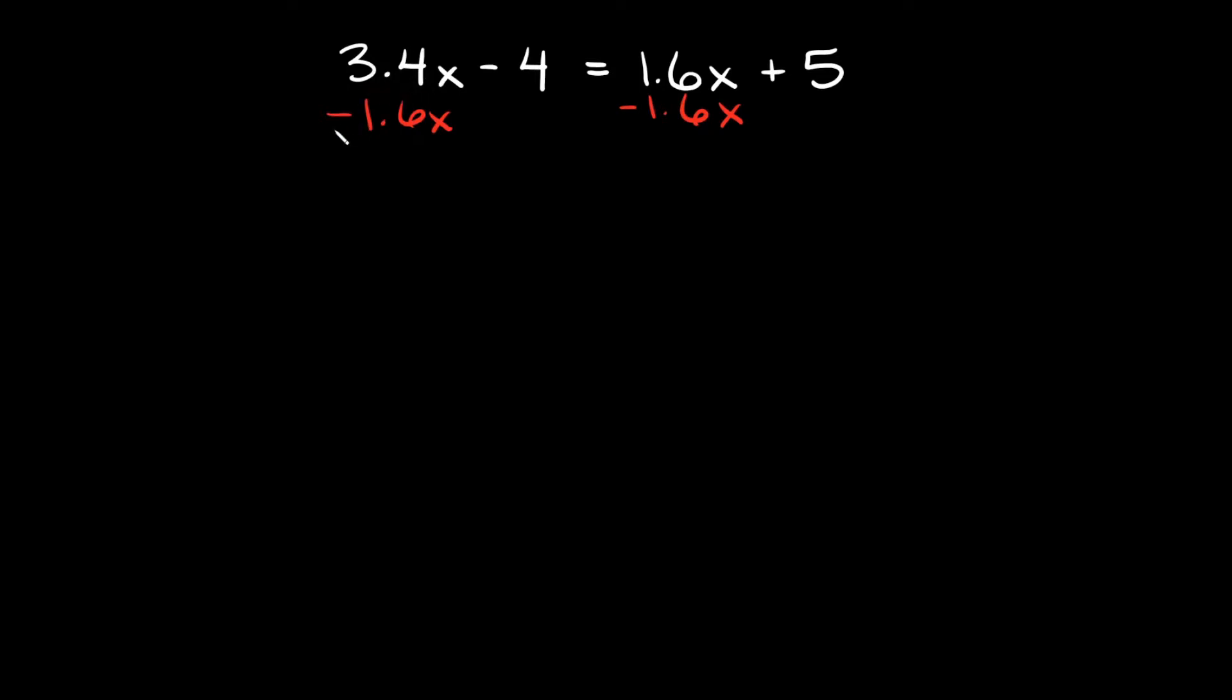So what's 3.4 minus 1.6? That's going to be equal to, you can plug it into a calculator if you want, 1.8. And since they both have an x you just keep the x. So 3.4x minus 1.6x is equal to 1.8x.